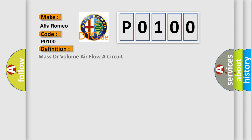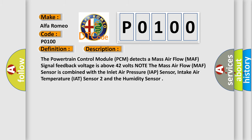The basic definition is mass or volume air flow A circuit. And now this is a short description of this DTC code. The powertrain control module PCM detects a mass airflow MAF signal feedback voltage is above 4.2 volts.